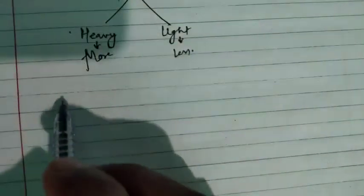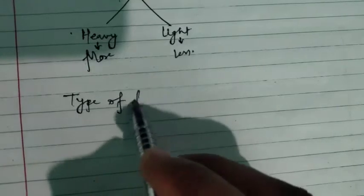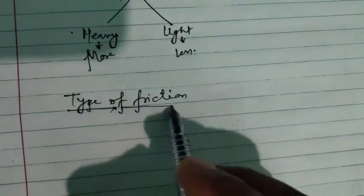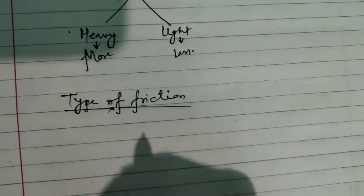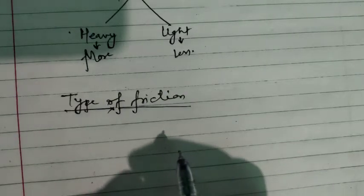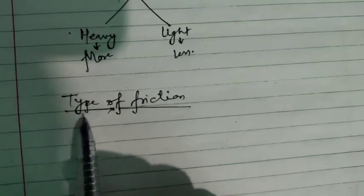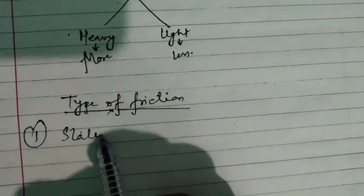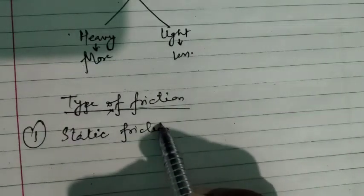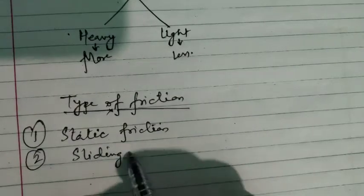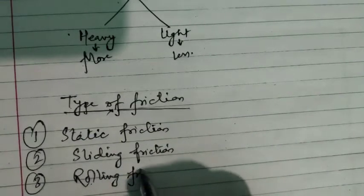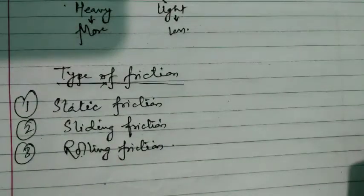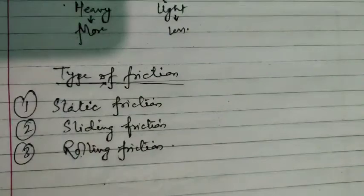Now let us move to our next topic: types of friction. Friction is the opposite force working on a body to slow down the motion of an object. There are three types of friction: first is static friction, second is sliding friction, and third is rolling friction.